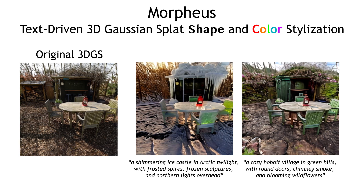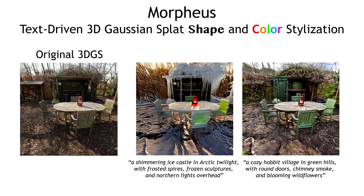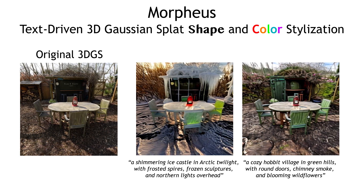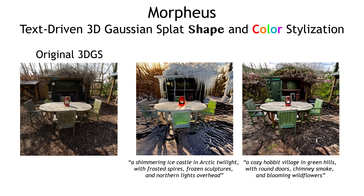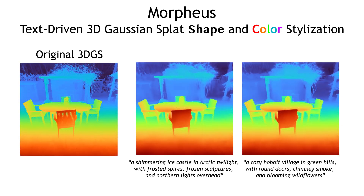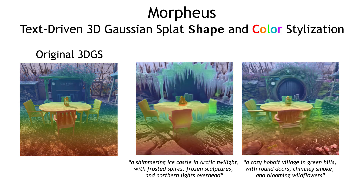We present Morpheus, a method for text-driven shape and color stylization of 3D Gaussian splatting. Our method produces better-looking stylizations compared to existing work. What's more, it allows control over shape changes. We can convincingly change the geometry in the scene, leading to more dramatic and pleasing stylizations.